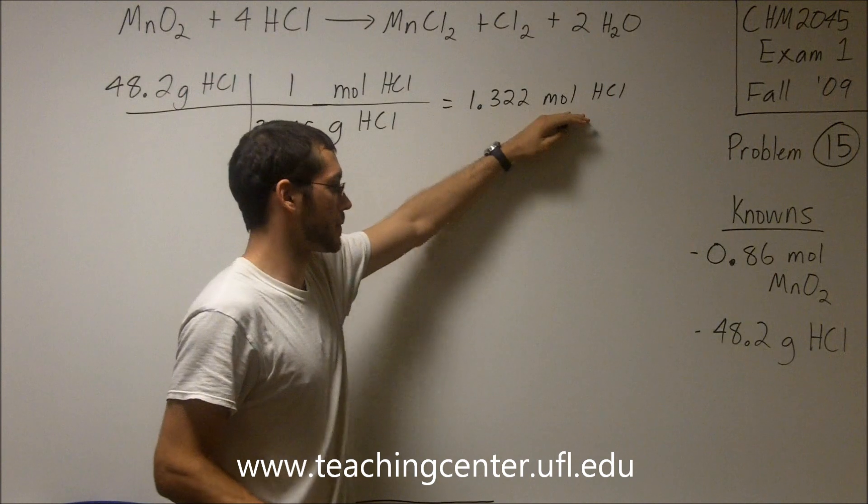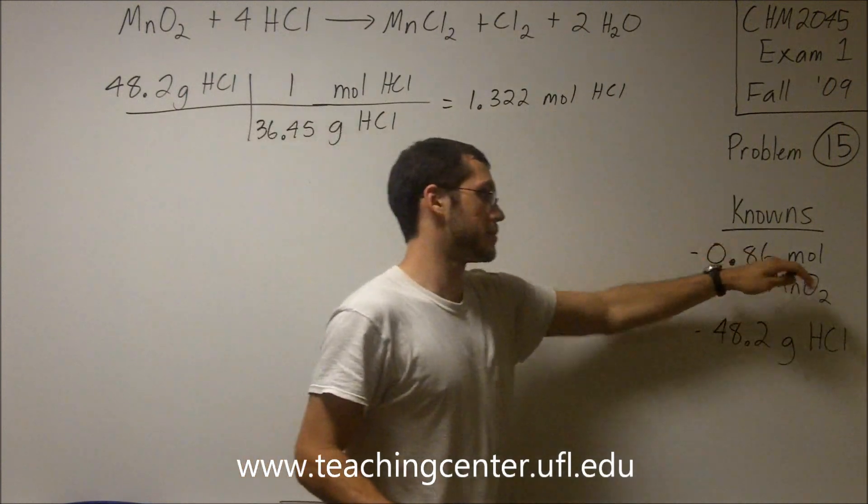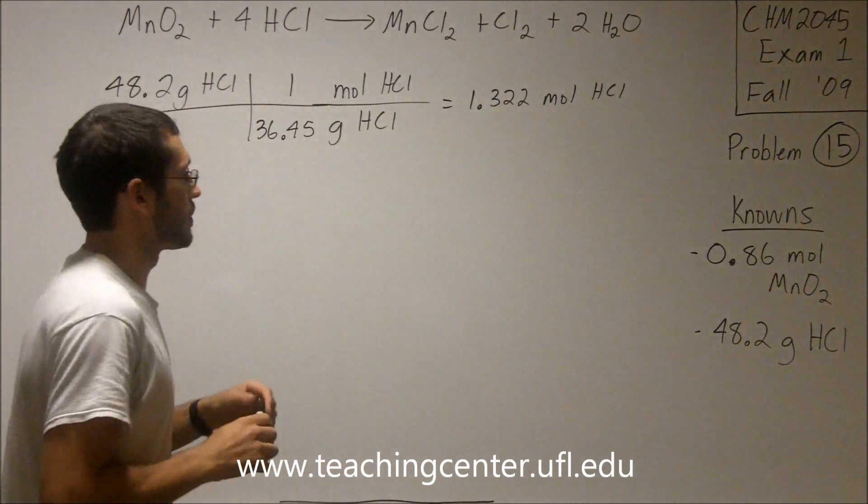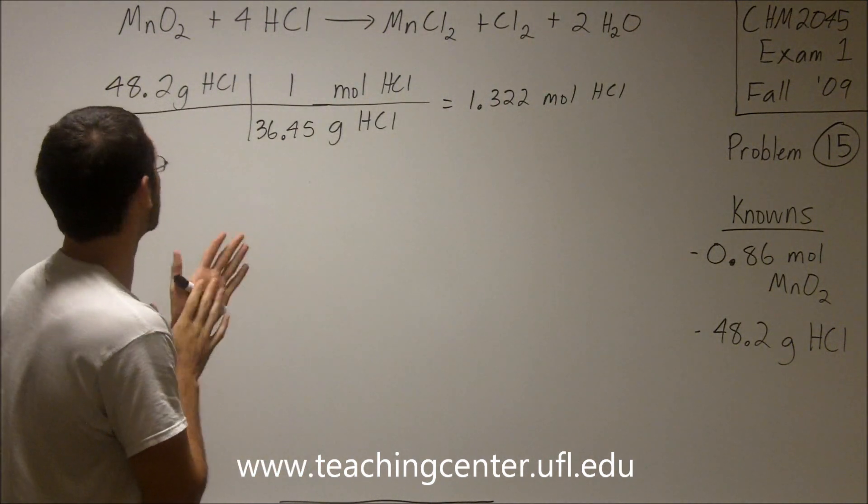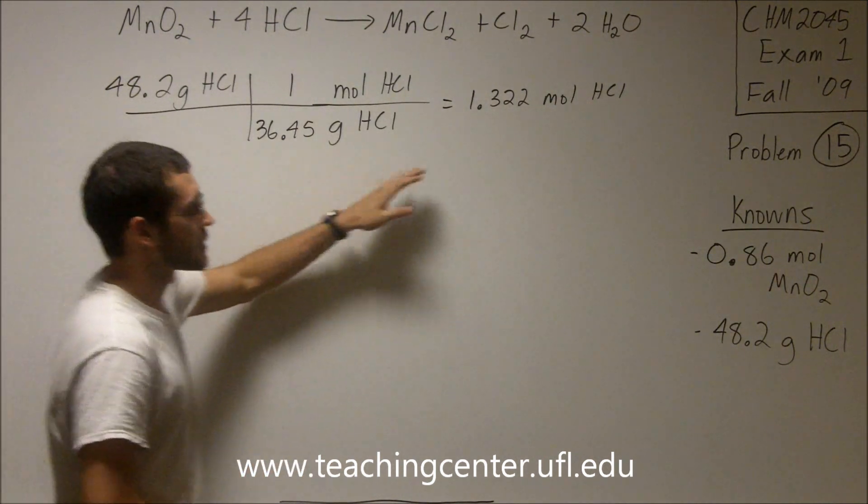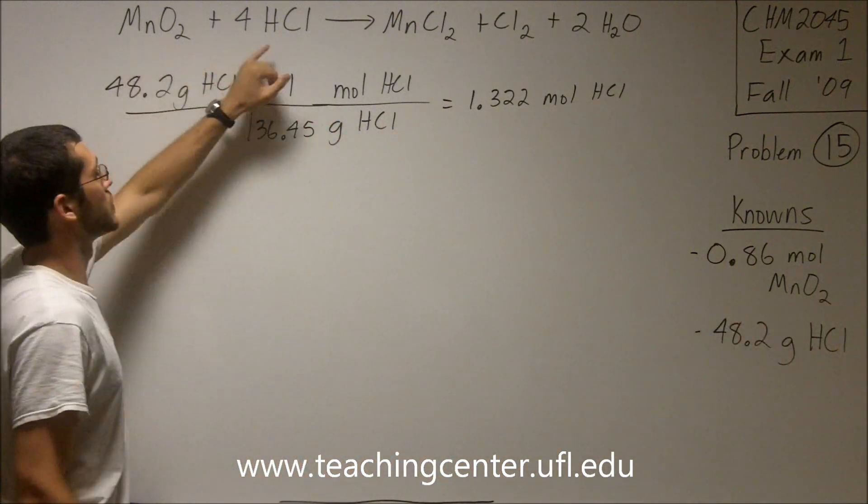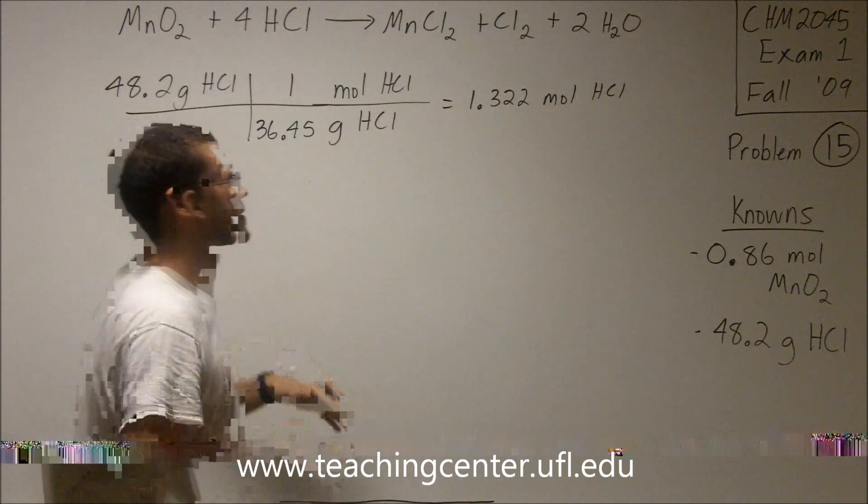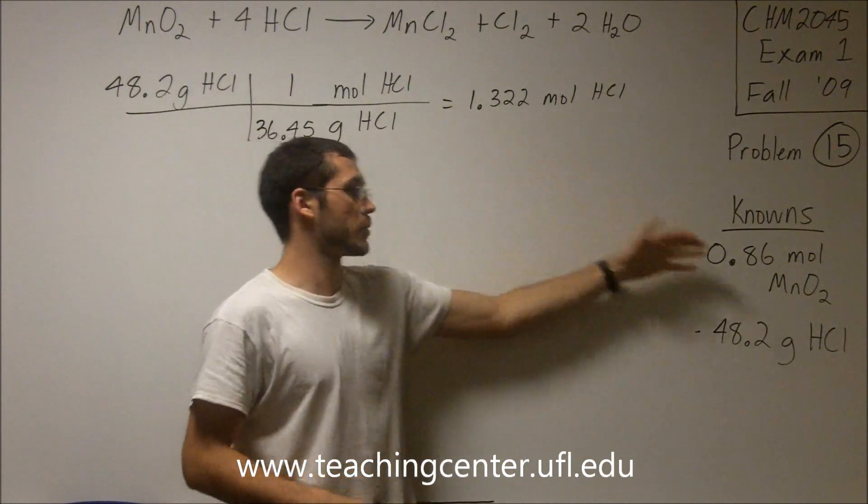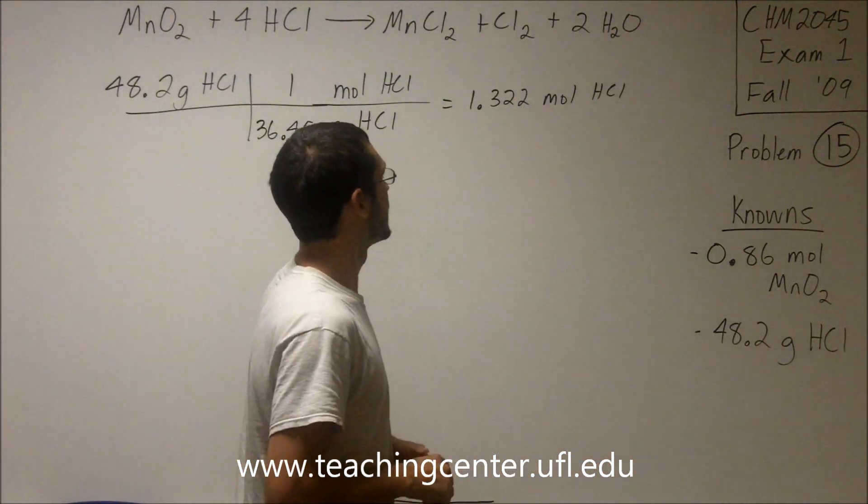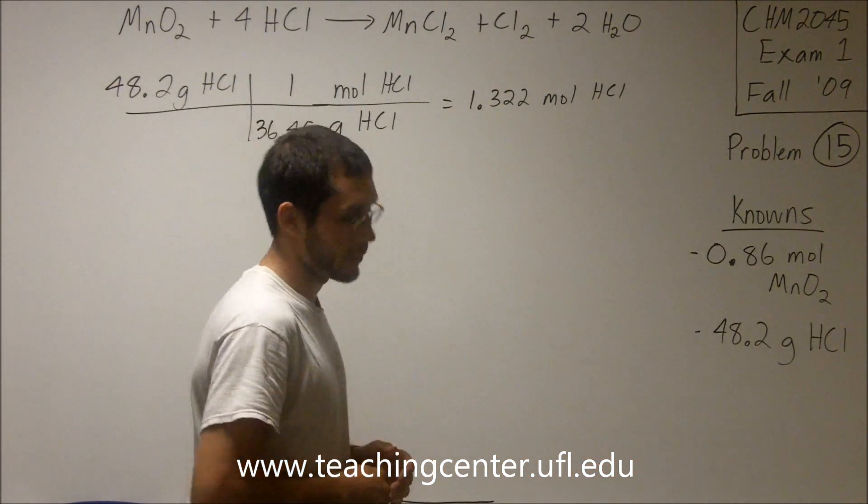So now that I have my moles of HCl, I can compare it to my moles of MnO2. This is kind of tricky though. Both of these things are going to react together. The MnO2 and the HCl. They're going to react, react, react. Except one of these will run out. And that's the concept behind limiting reagent. So how do we figure out which one will run out?